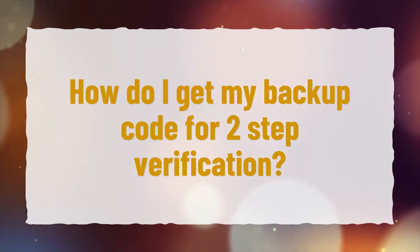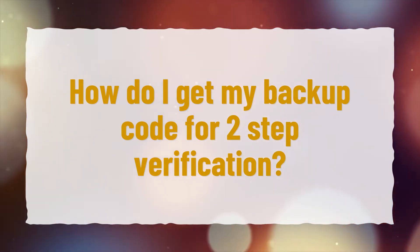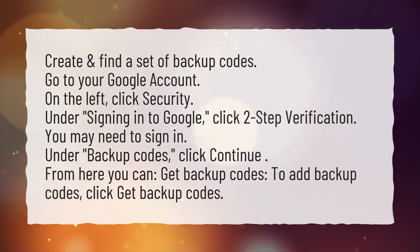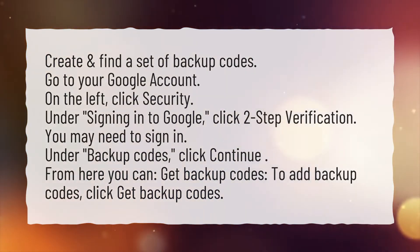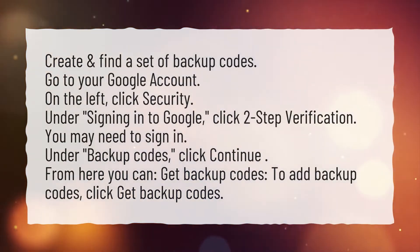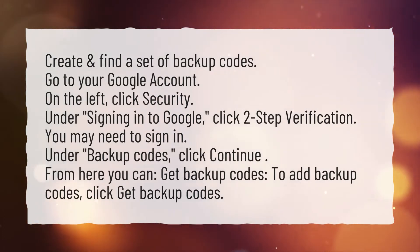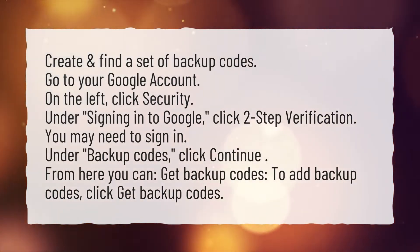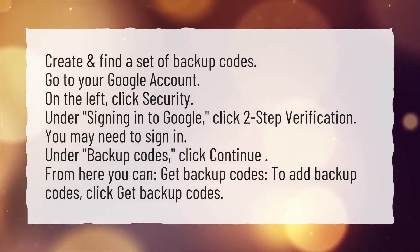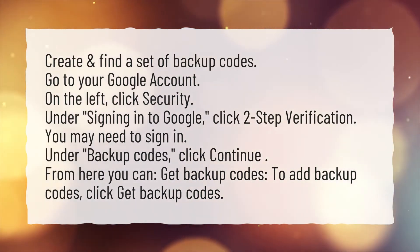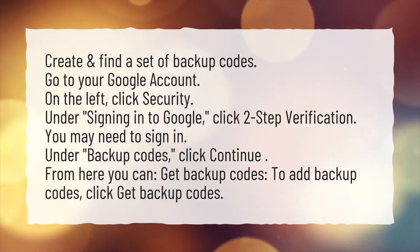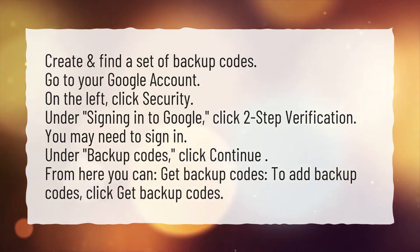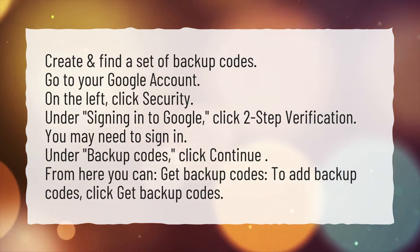How do I get my backup code for two-step verification? Create and find a set of backup codes. Go to your Google account. On the left, click Security. Under Signing into Google, click Two-Step Verification — you may need to sign in. Under Backup Codes, click Continue. From here you can Get Backup Codes. To add backup codes, click Get Backup Codes.